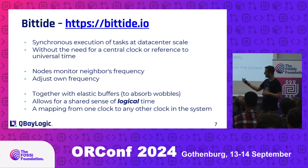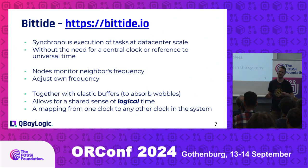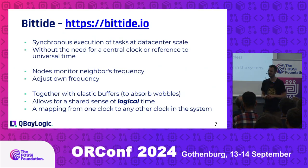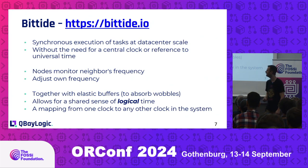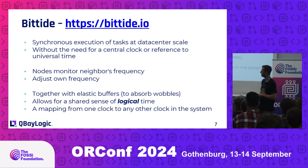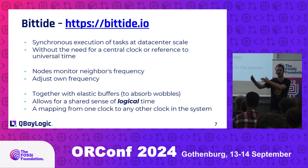Together with some elastic buffers to absorb phase wobble, we get something called a shared notion of logical time. This is different from wall clock time, but it's really sufficient to schedule your distributed applications at data center scale. We don't care about wall clock — we just care about what clock cycle a message arrives at. We can absorb any phase wobble using small FIFOs.